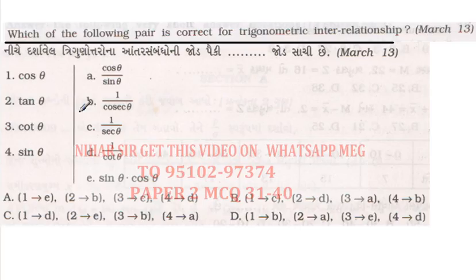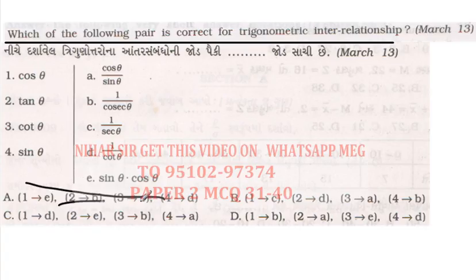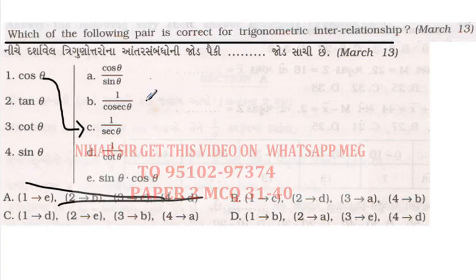Let me check all the options. Option A says sin into cos equals cos — I don't think there's any formula like this, so this is wrong. Let me go with B. Option C: cos and sec — keep that formula in front of you which I explained in Paper Number 1.